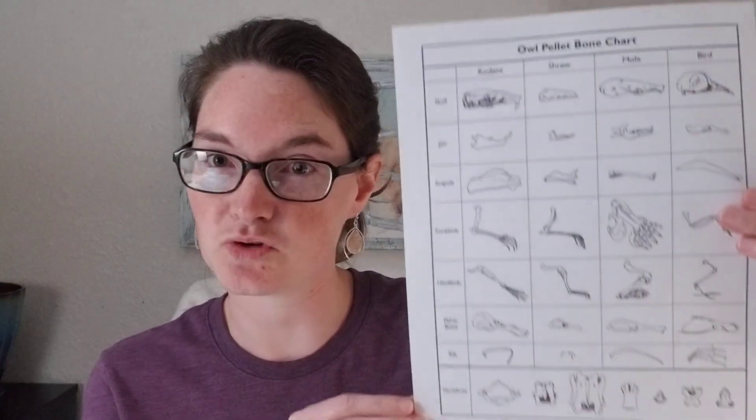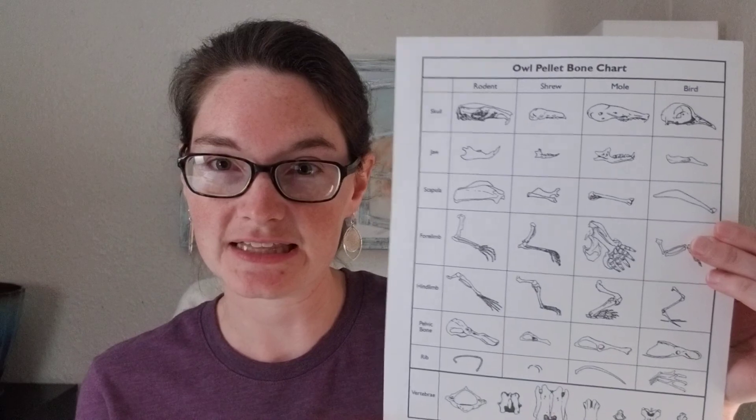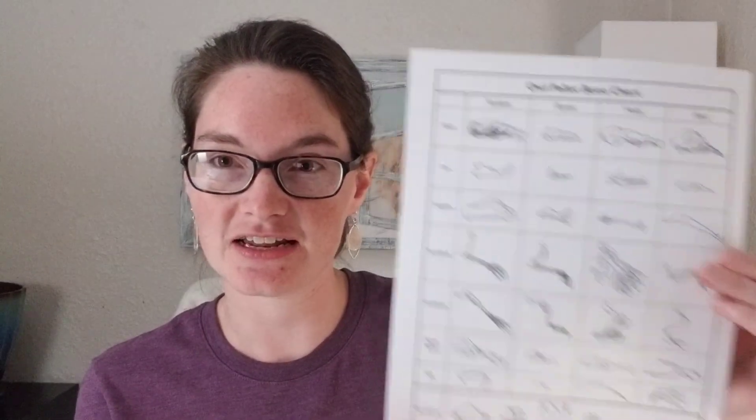You'll probably get owl pellets that are wrapped in foil like this. I don't have an owl pellet here today, but they'll be about this size and wrapped in foil. For your class, students will probably have plastic gloves, plastic tweezers, paper and pencil, and also these owl pellet bone charts — I'll put a link in the description of the video.